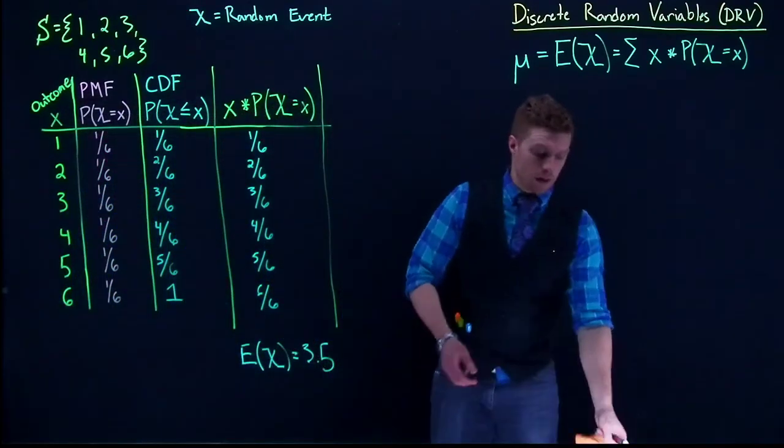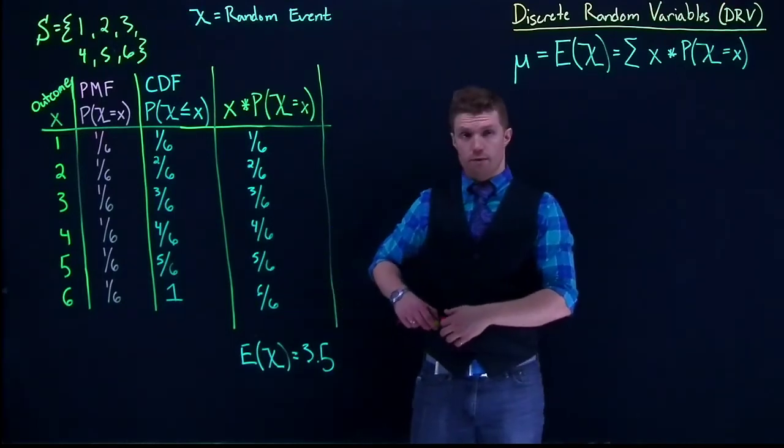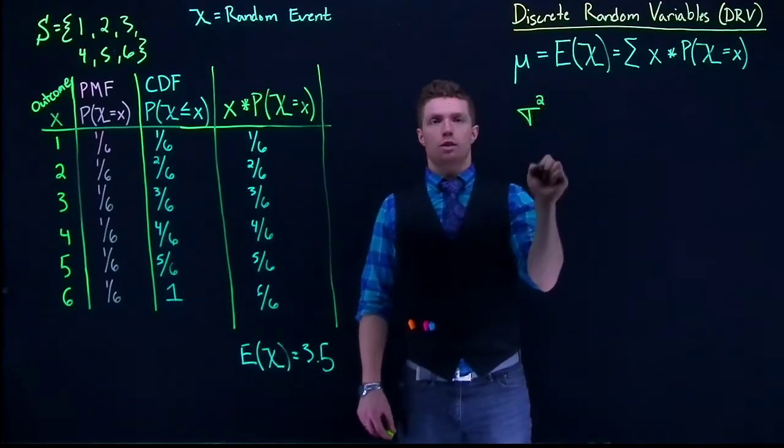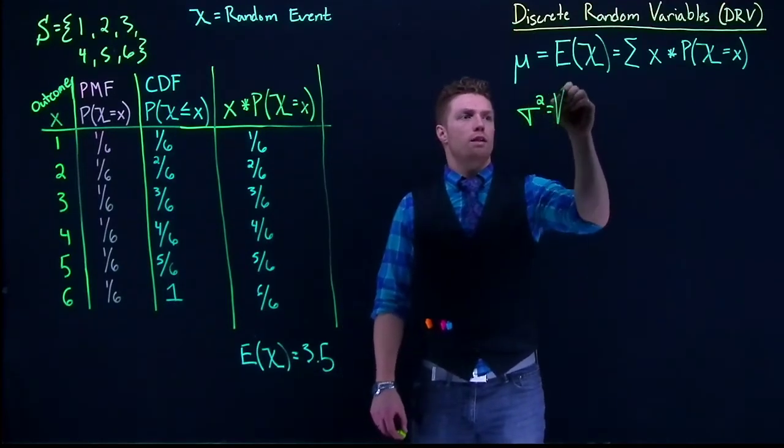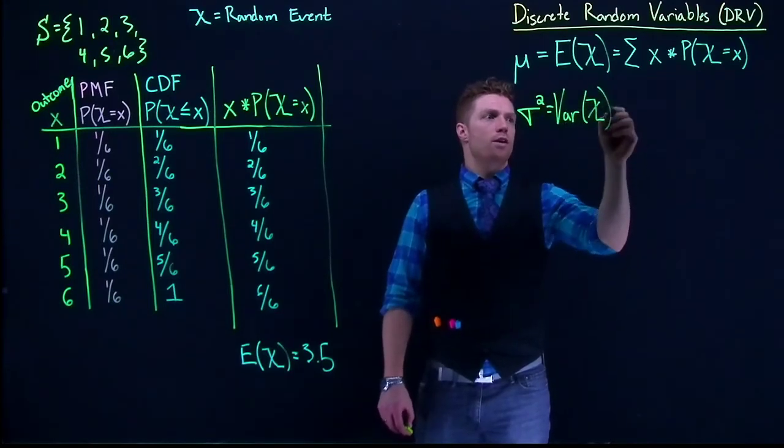So the other thing that we oftentimes are interested in is talking about some measures of spread, or the variance. And remember, variance is equal to sigma squared. And we write this out a lot of times as the variance of our discrete random variable.